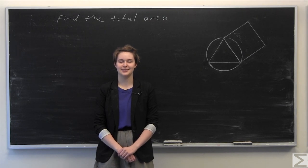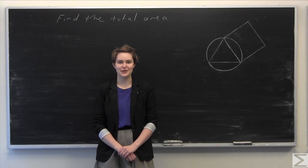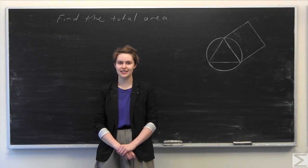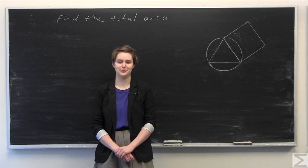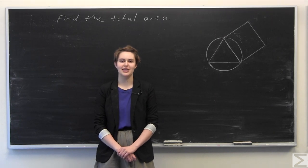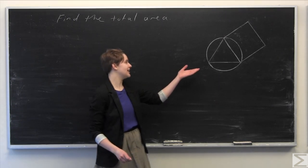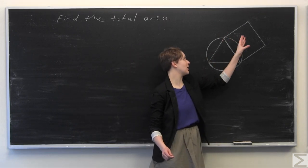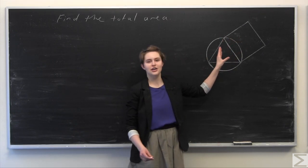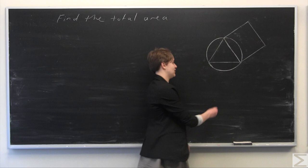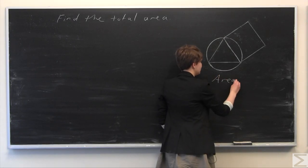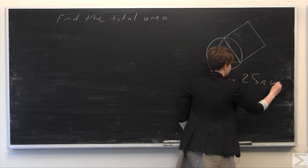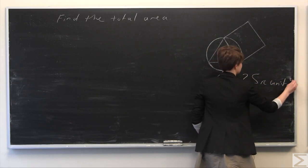Welcome to the World Wide Center of Mathematics. Today, I'll be going over this week's Problem of the Week. For the full problem and solution transcript, you can see the link in the description of this video on our YouTube channel. This week's Problem of the Week asks you to find the total area enclosed by the given circle and square, given only that the area of the circle is equal to 25π units squared.